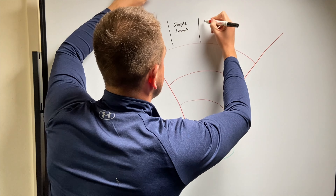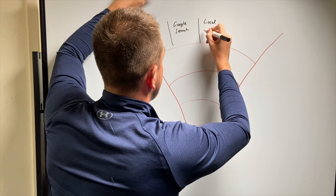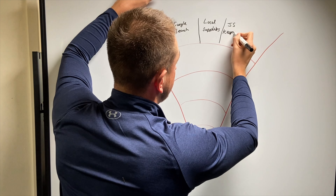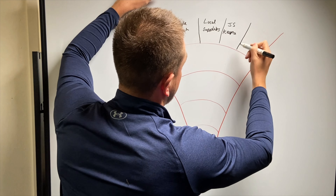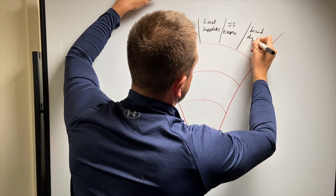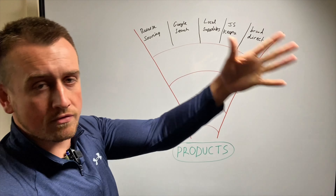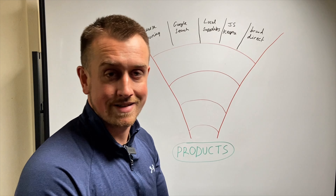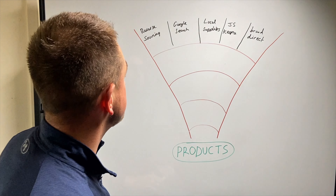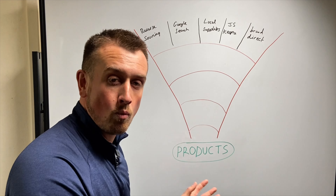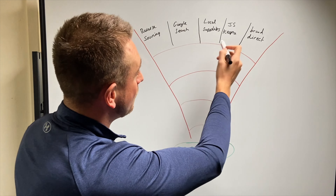— a standard one that pretty much everyone knows and tries. We've got local suppliers — so going to local suppliers near where you live. We've got other methods using tools like Jungle Scout and Keeper, and then we've got Brand Direct. There's just a few methods you can start using straight away to find wholesale suppliers. Now every single one of these works — there's not one secret way, there's not one way that works and one that doesn't.